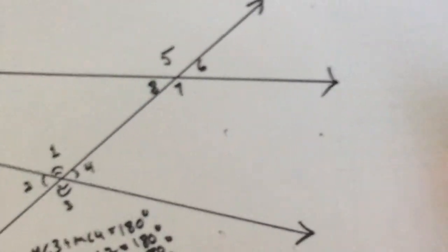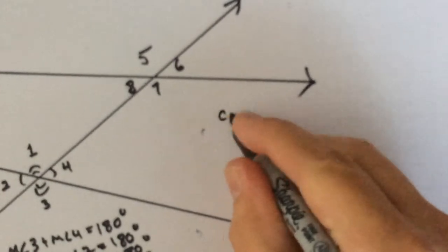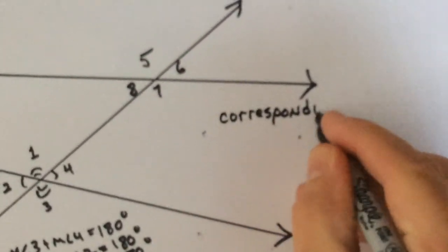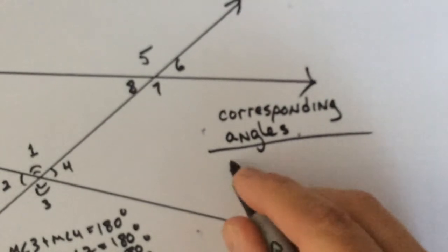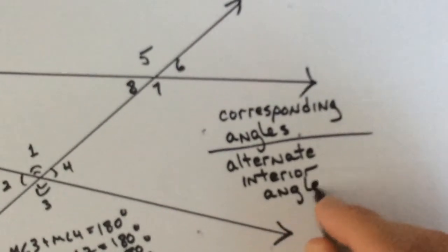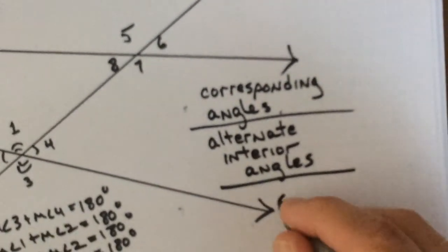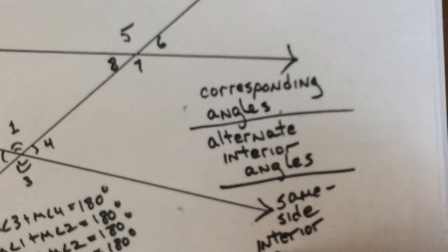These are the names of the relationships. Let me give them to you first so you can write them down. Corresponding angles, that's one. I have alternate interior angles, that's another, and then same side interior angles.